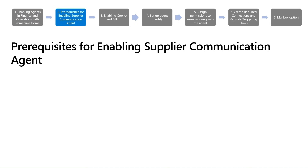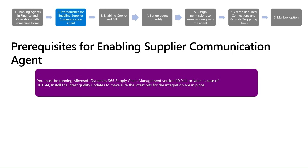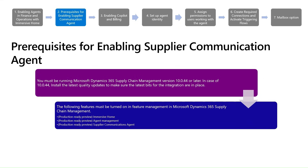Prerequisites for enabling the supplier communication agent: to fully enable agent-driven capabilities in Microsoft Dynamics 365 Supply Chain Management, it is essential to be running version 10.0.44 or later. If you are on version 10.0.44 specifically, make sure to install the latest quality update to ensure all integration components are up-to-date. Additionally, several features must be activated through Feature Management: Immersive Home, Agent Management, and the Supplier Communication Agent, all marked as production-ready preview.